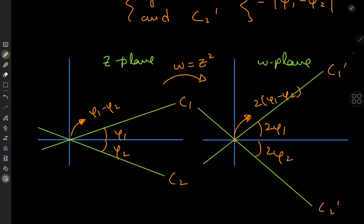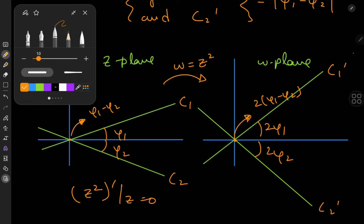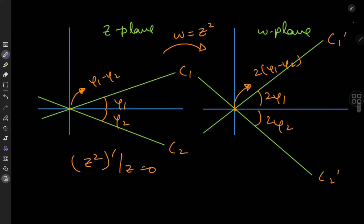So we see that the angle between the curves is not preserved where the derivative of the function, that is z squared, is zero as in at the origin. And this makes perfect sense if we recall our knowledge on holomorphic inverse functions.